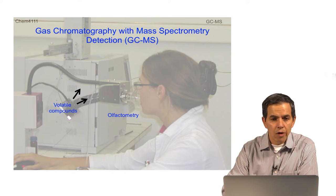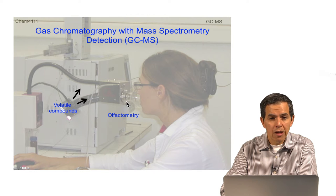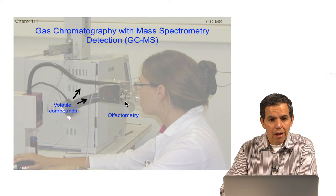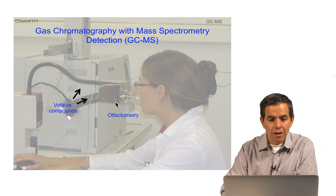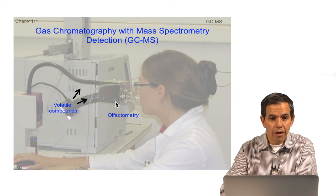This picture illustrates the ability to not only detect these compounds by mass spectrometry, but also by the nose, which in this particular case is known as olfactometry. These two complementary techniques stress the fact that this is a technique to analyze volatile compounds, or compounds that you can smell directly.